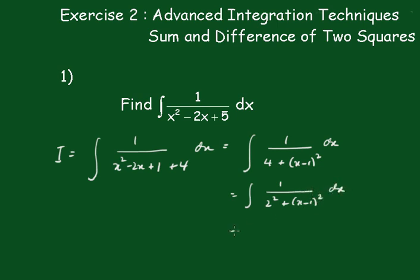Now this is the inverse tan function. This will be a 1 on 2, don't forget the 1 on 2 at the front, tan to the minus 1 of x minus 1 all over 2, plus a constant.